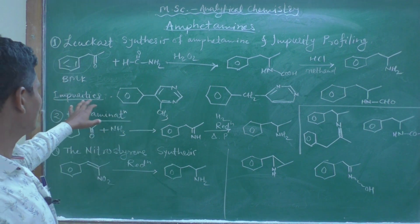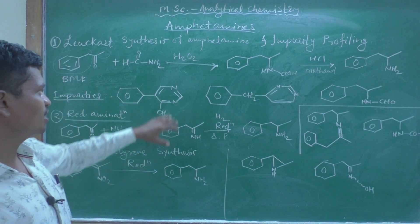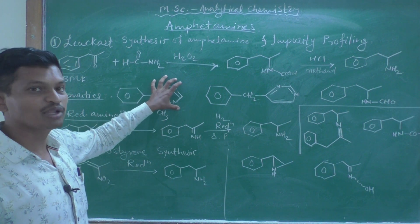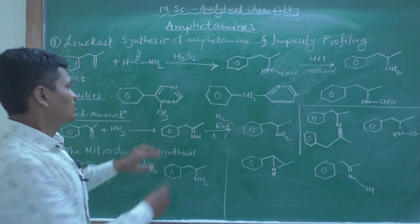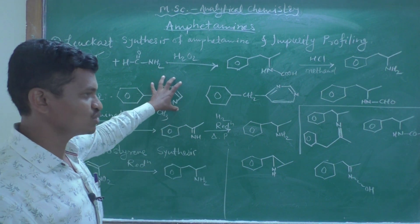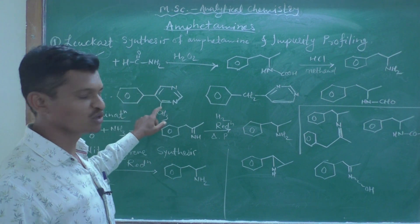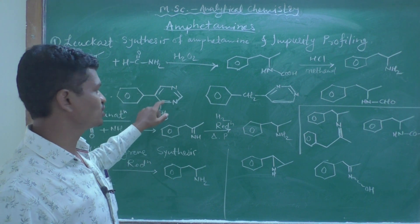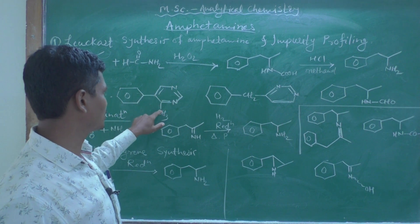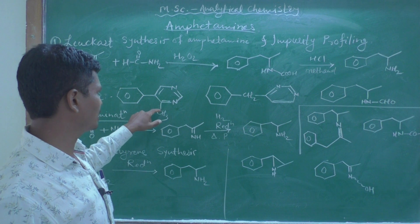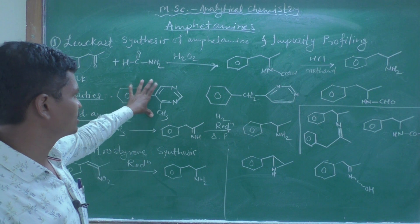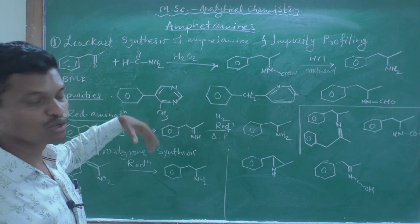So what are the impurity profiles in this Leuckart synthesis? The first impurity contains a pyrimidine moiety — a benzene ring and a pyrimidine ring. Two nitrogen atoms are present at the 1 and 3 positions to each other, and this ring is also aromatic. One methyl group is present at the fourth position of this pyrimidine ring, so it is 4-methyl-5-phenylpyrimidine.